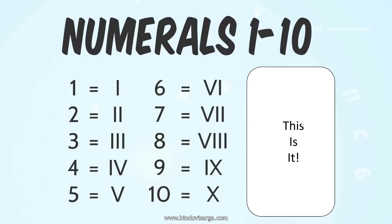Let's have a quick look at the numerals from 1 to 10: 1 is I, 2 is II, 3 is III, 4 is IV, 5 is V, 6 is VI, 7 is VII, 8 is VIII, 9 is IX — which is also the second instance of subtraction — and 10 is X.